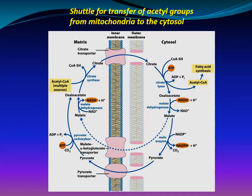The shuttle transfers acetyl groups from mitochondria to the cytosol. Pyruvate derived from amino acid catabolism in the mitochondrial matrix, or from glycolysis in the cytosol, is converted to acetyl-CoA in the matrix. Acetyl groups pass out of the mitochondria as citrate and are delivered in the cytosol as acetyl-CoA for fatty acid synthesis. Oxaloacetate is reduced to malate, which can be returned to the mitochondrial matrix and converted back to oxaloacetate. The major fate of cytosolic malate is oxidation by malic enzyme to generate cytosolic NADPH; the pyruvate produced returns to the mitochondrial matrix.